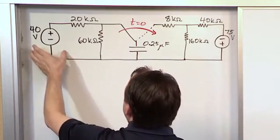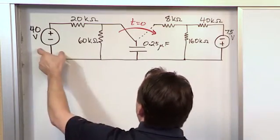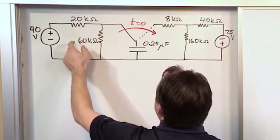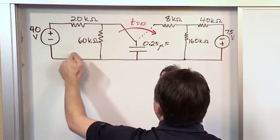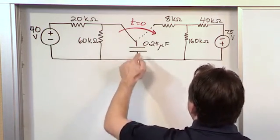So when we're in circuit A initially, we have 40 volts, 20 kilo ohms, 60 kilo ohms, and so the current comes through here. Some of it goes this way, some of it goes and charges up this capacitor.